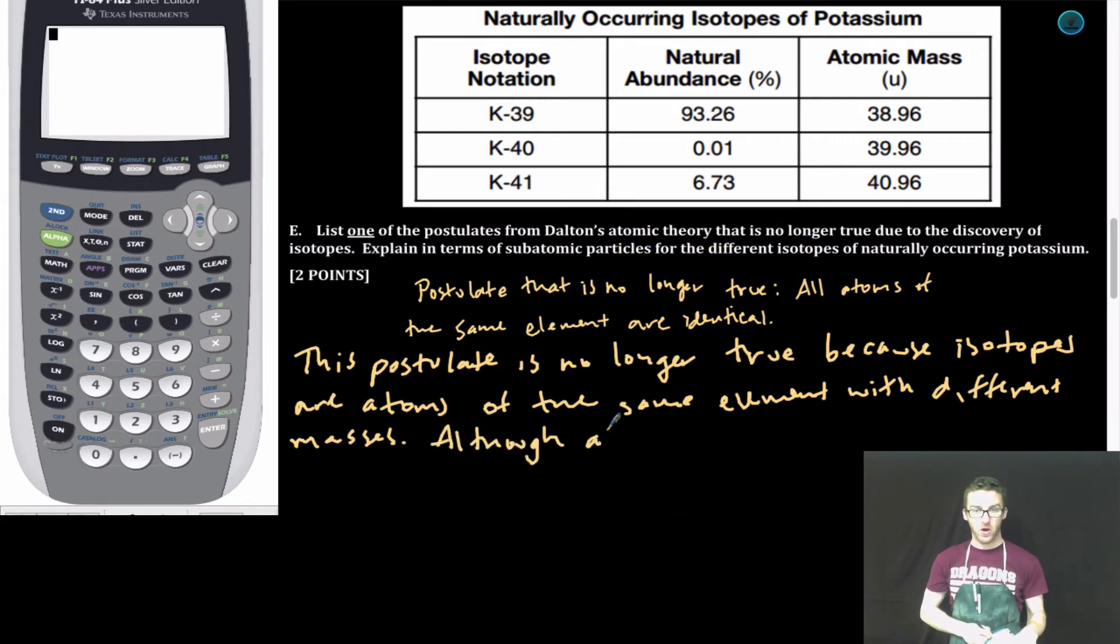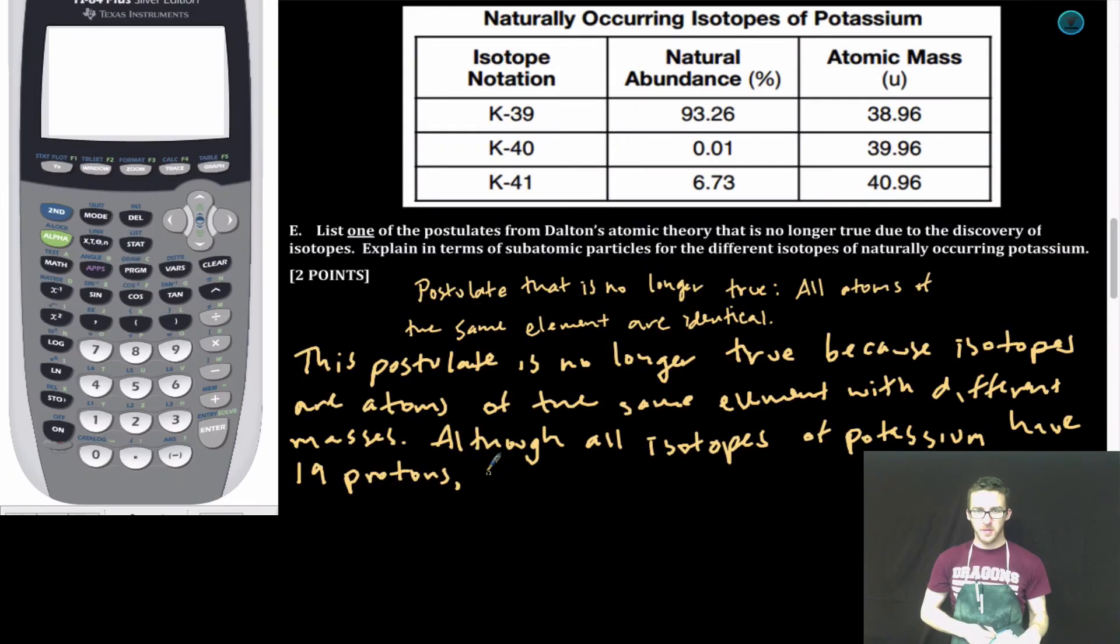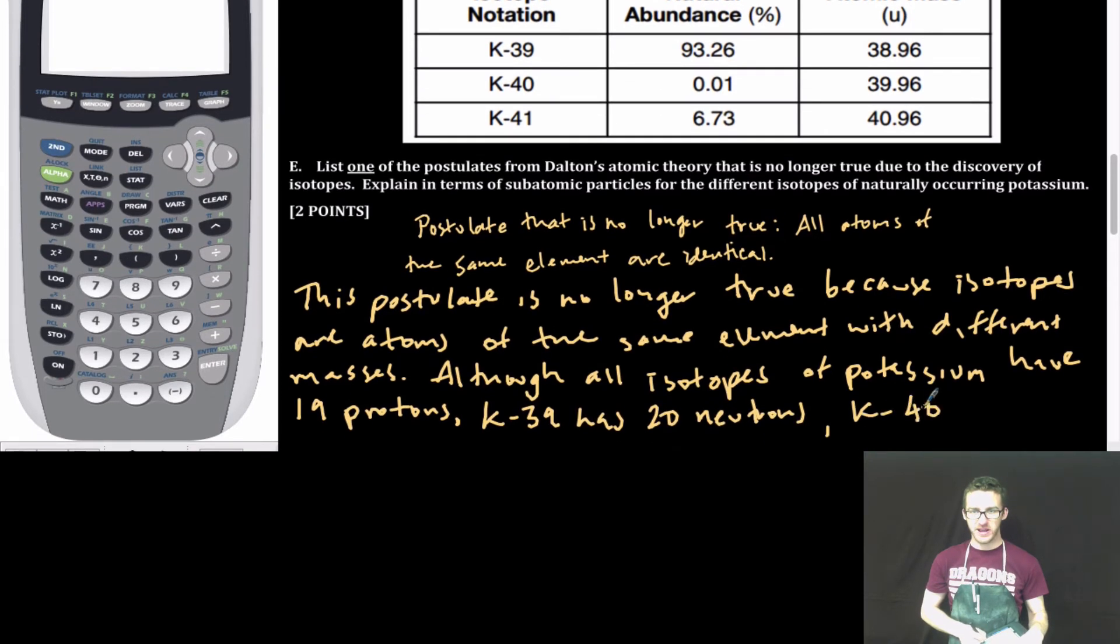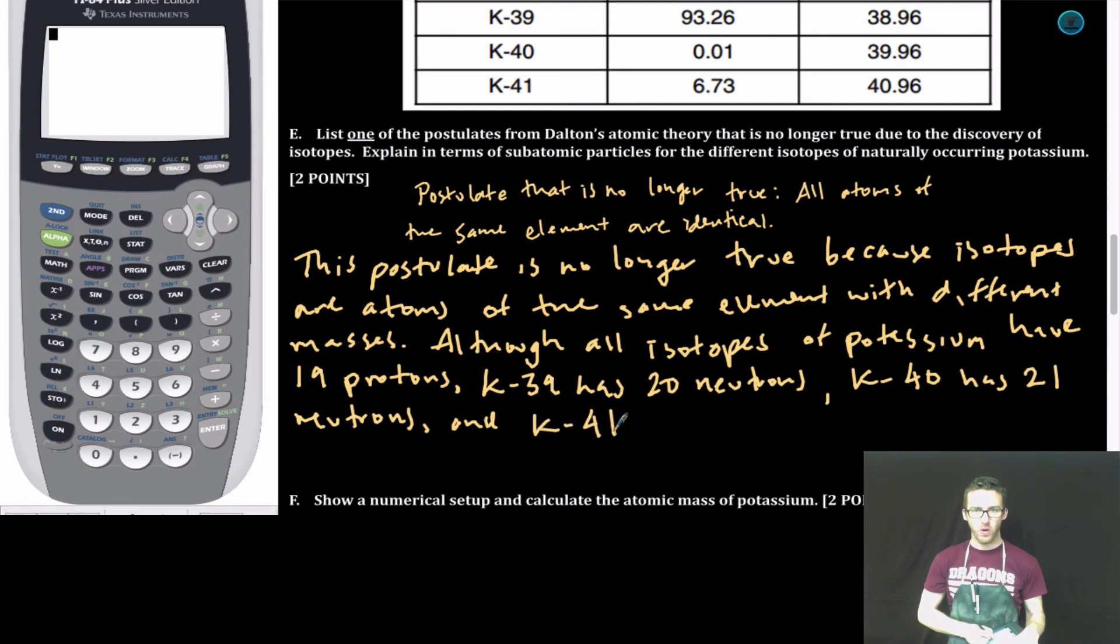Although all isotopes of potassium have 19 protons, potassium-39 has 20 neutrons, potassium-40 has 21 neutrons, and potassium-41 has 22 neutrons. Make sure you're reading carefully and answering the question as you're asked.